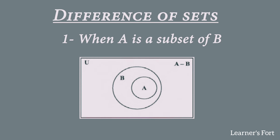Now let's move to the difference of sets. The first case is where A is a subset of B, and we perform A minus B. Since A is a subset of B, all elements of A are present inside B. When we subtract the elements of B from A, all elements of A get subtracted and there is nothing left. So the result is an empty set, and there is no shaded portion in the Venn diagram.